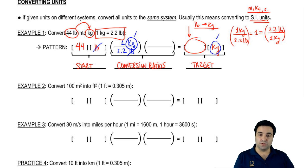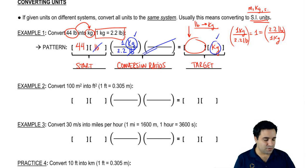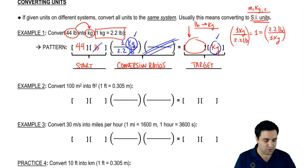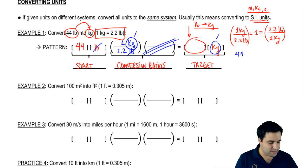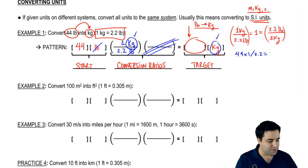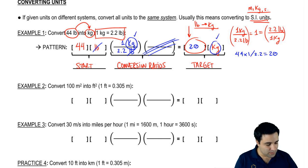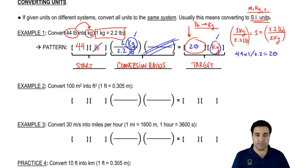So I have nothing else to do here other than just multiply. Now I can just multiply these numbers. I get 44 times 1, divided by 2.2. And if you plug this into a calculator, you're going to get 20. So the answer is 20 kilograms. That's how we're going to do that — you just follow the pattern.